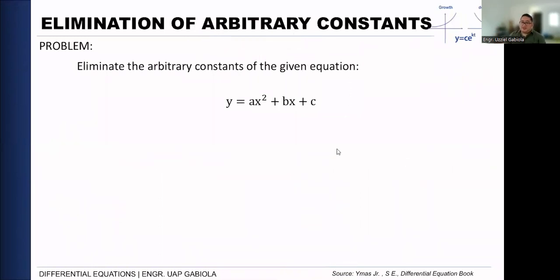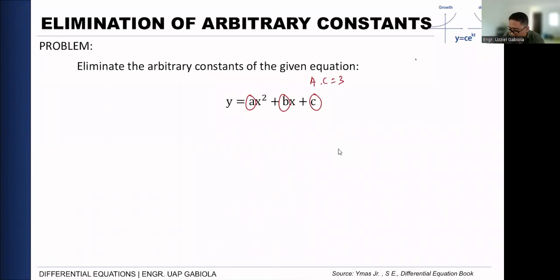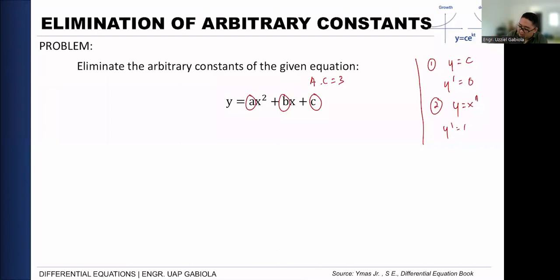Next example: eliminate the arbitrary constant from the quadratic equation y = ax² + bx + c. We have three arbitrary constants: a, b, and c. So we need to differentiate three times. The formulas we use are: derivative of a constant equals zero, and the power rule giving nx^(n−1)dx. Performing the first derivative: y' = 2ax + b.